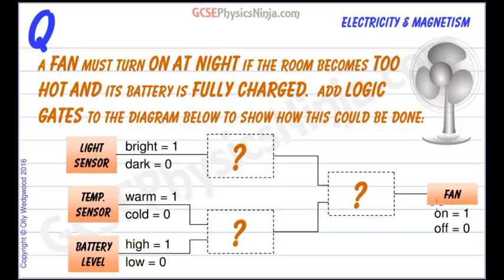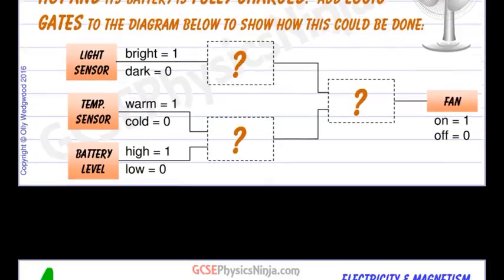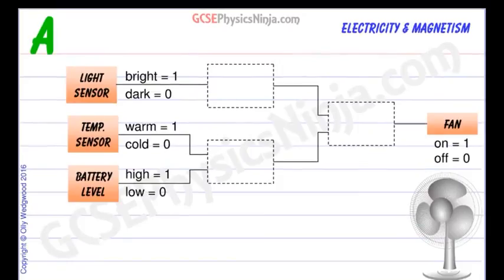So we're looking for that fan to switch on, so we're looking for a logic 1 as the output and that would be the signal to switch the fan on. So let's take a look at how we can design this circuit.